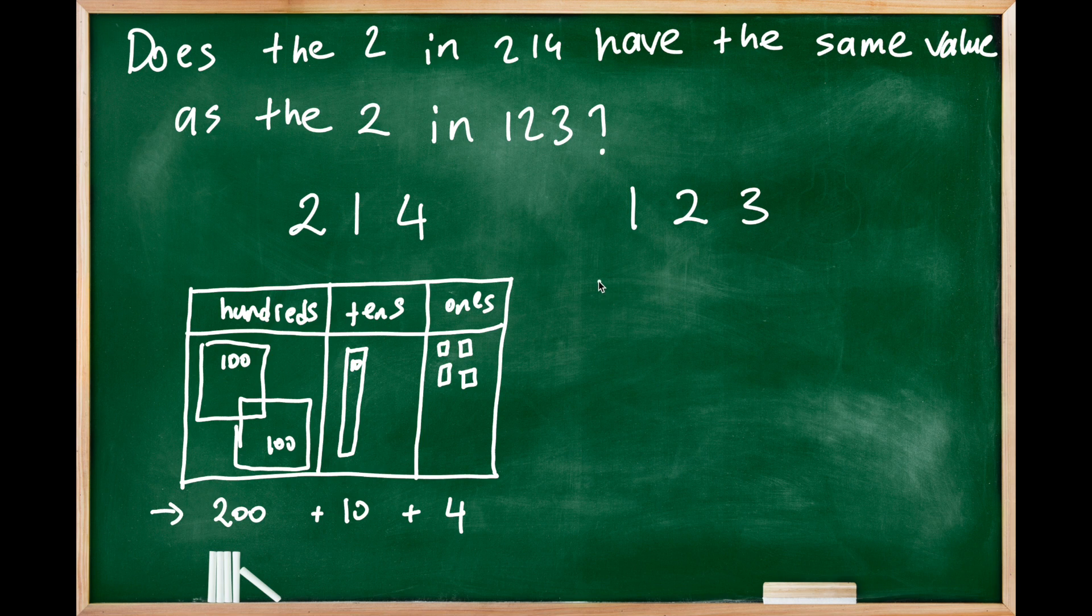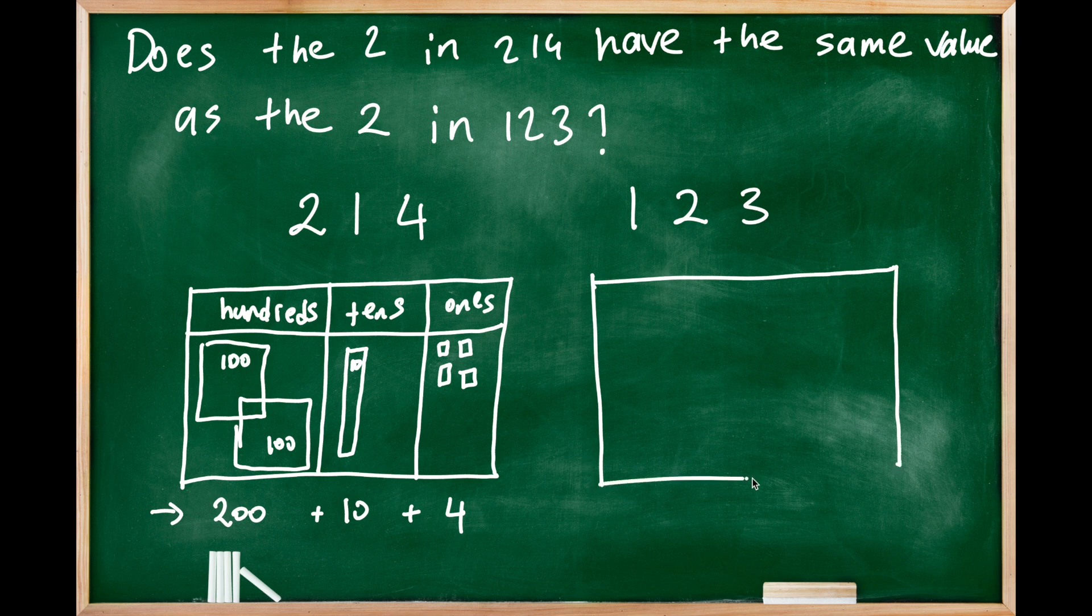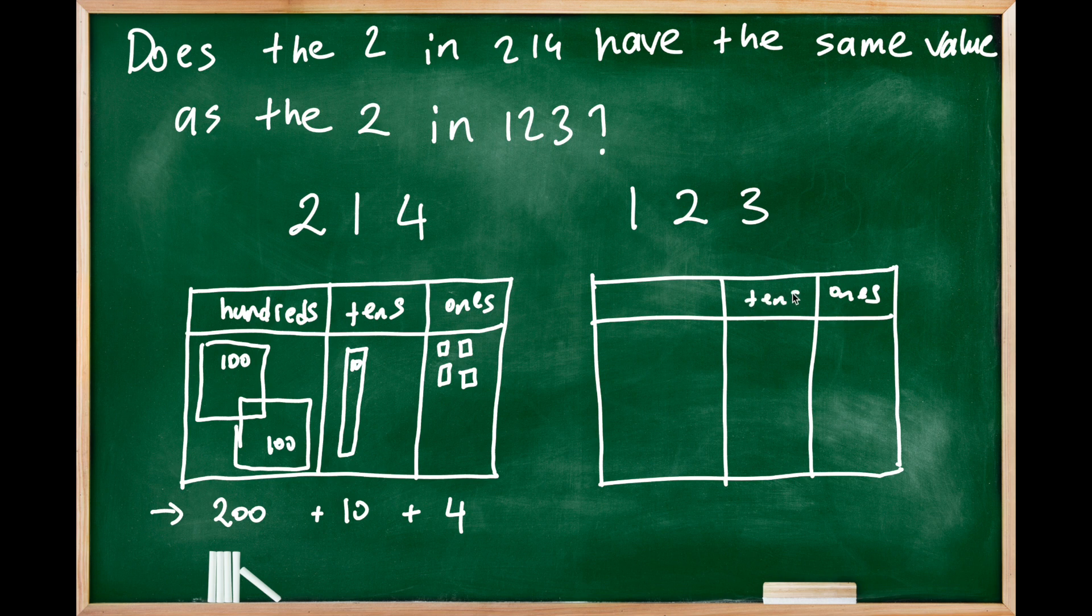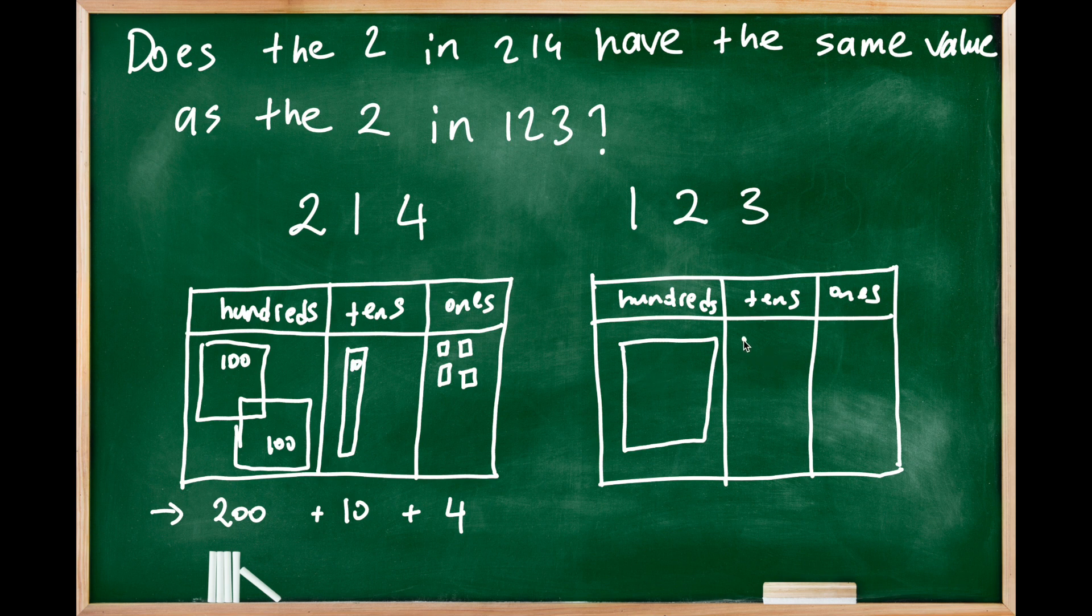So let's create this place value table for 123: ones, tens, hundreds. In the hundred column, I have one single hundred flat. In tens, I have two ten rods.